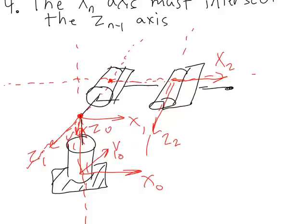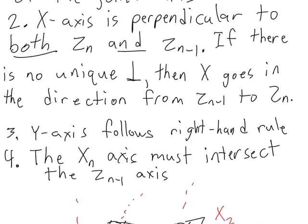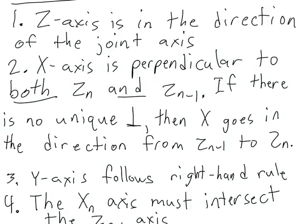The last thing we have to do is draw a frame on the end effector. As done previously, the end effector frame should match the frame immediately preceding it. So here we have x2, y2, z2, and I will simply duplicate this frame on the end effector. This is the complete list of rules defining how axes must be defined in the Denavit-Hartenberg method.